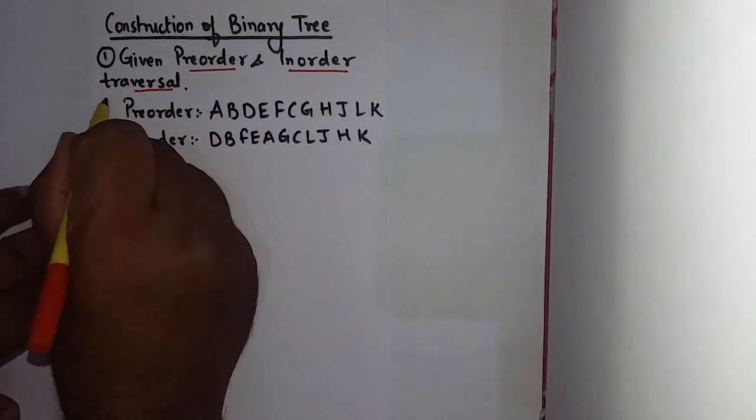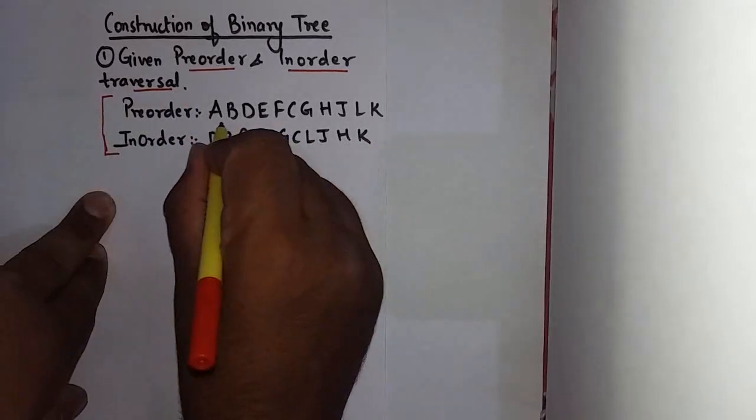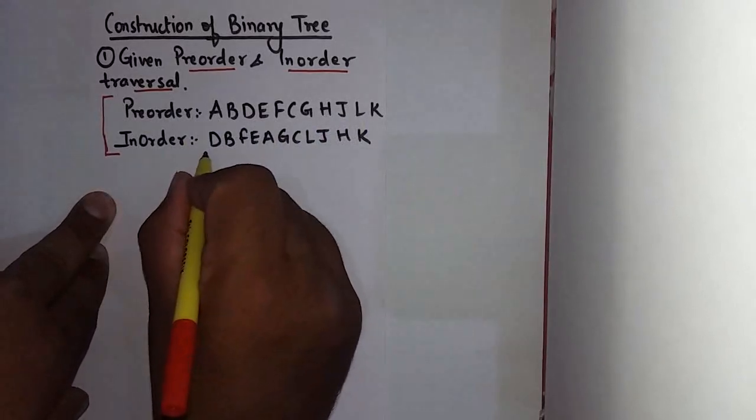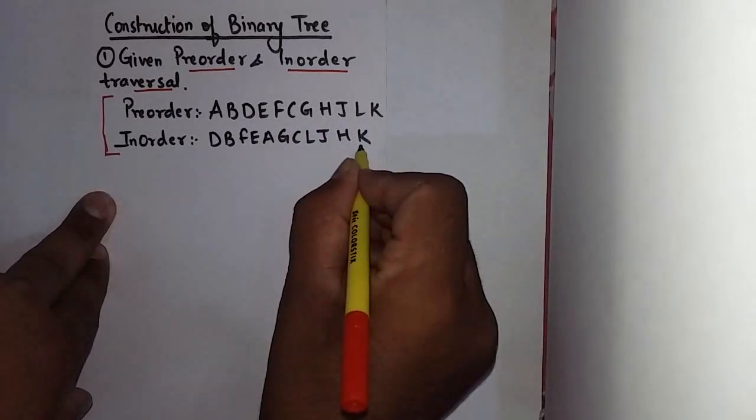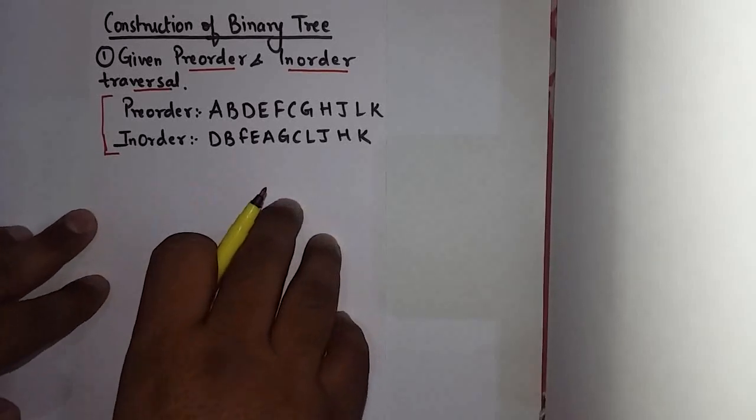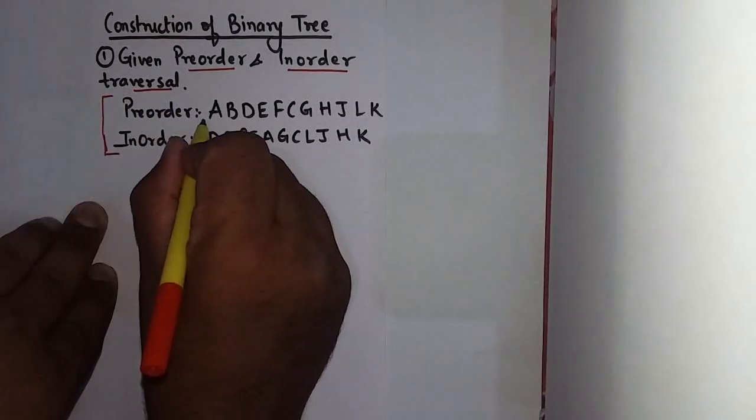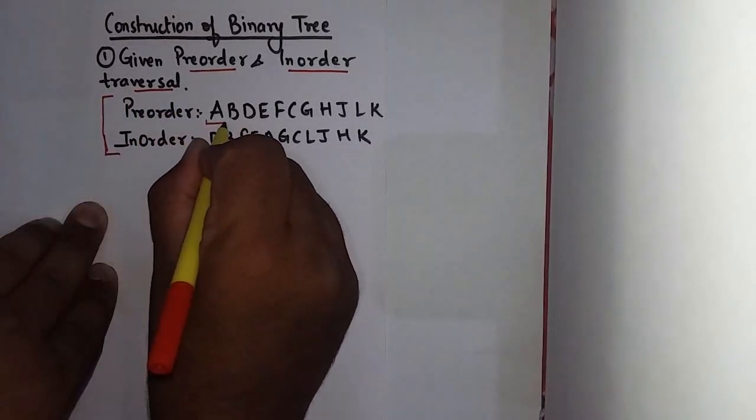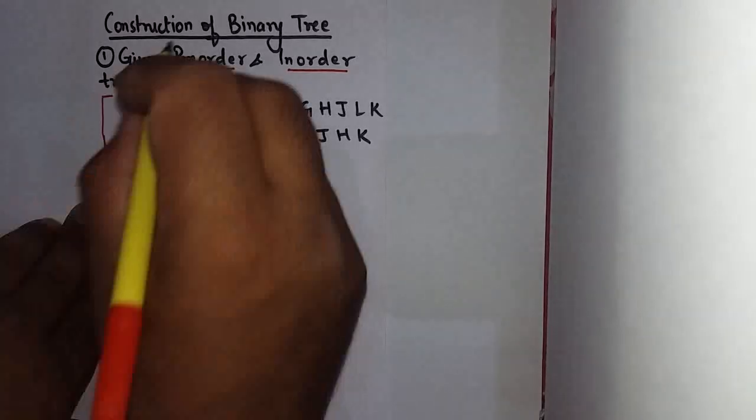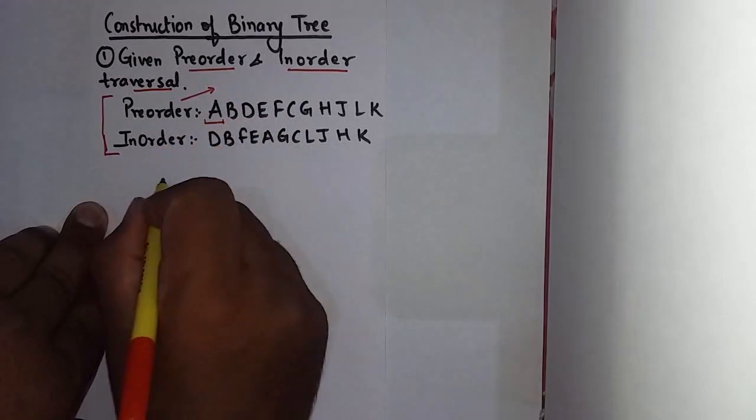For this I have taken an example in which preorder traversal is given as this and inorder traversal is given as this. Now we can see how we can draw a binary tree.